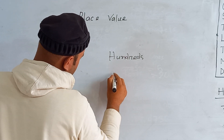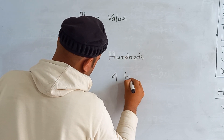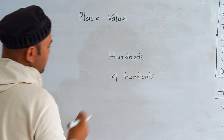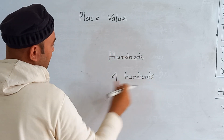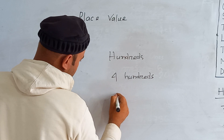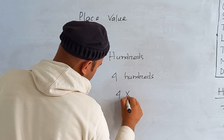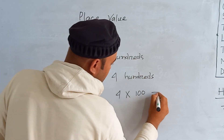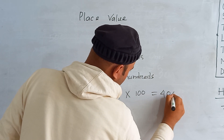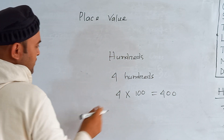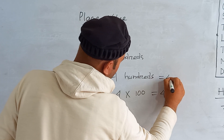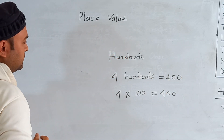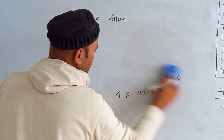Now for hundreds place: suppose here is four hundreds. Four hundreds means four multiplied by hundred, so four hundreds equals 400. We write four zero zero.